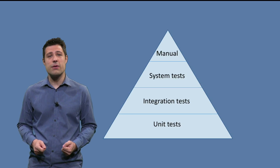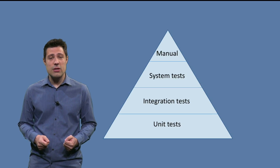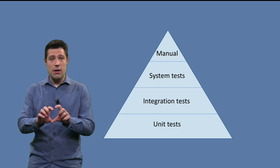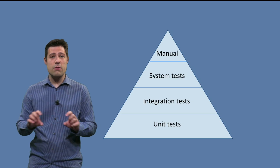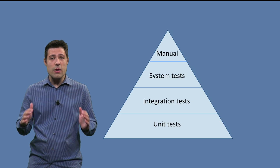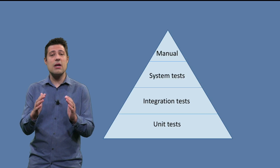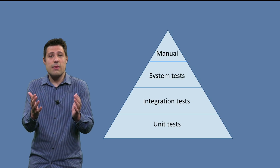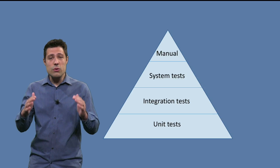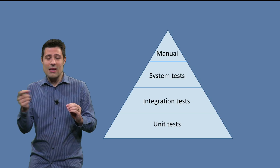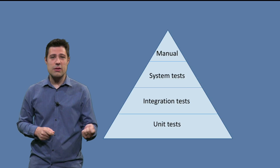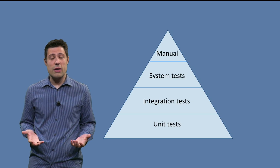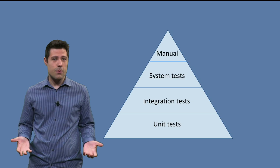As you can see in the figure, the idea is that you do a lot of unit tests, and that is why they are at the basis of the pyramid. Then you go for integration tests, and there you do a little bit less, because they are more expensive. Then you do system tests, but also a little bit less than integration tests. And finally, manual tests, where you try to avoid as much as possible.